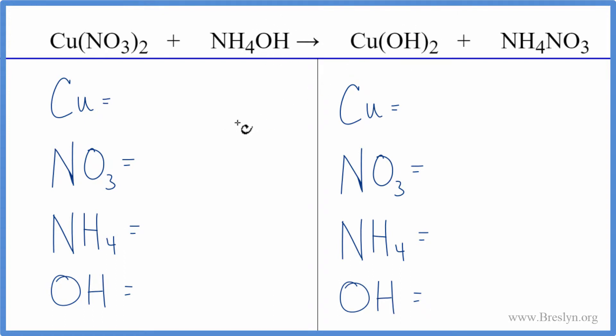This is a very effective strategy when you're balancing these double displacement reactions. It makes it a lot easier and less prone to error. Let's try it. We have one copper, one nitrate times two so we have two of those, one ammonium, and one hydroxide. On the product side we have one copper, one nitrate, one ammonium, and one hydroxide times two—so two of those.